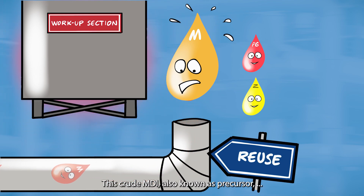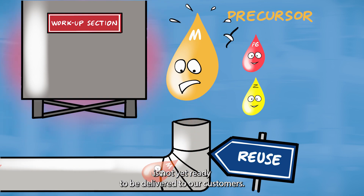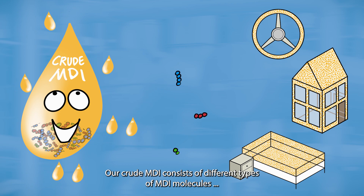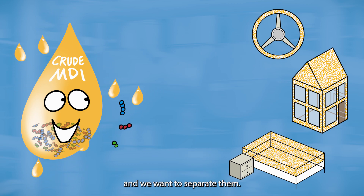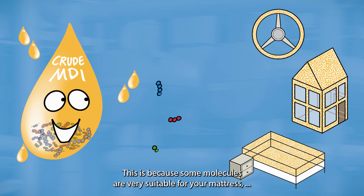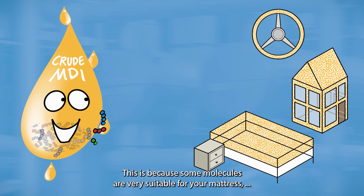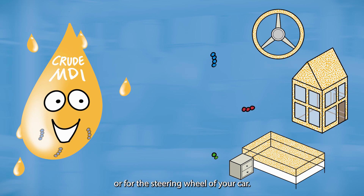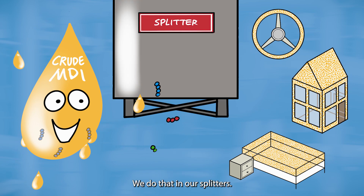This crude MDI, also known as precursor, is not yet ready to be delivered to our customers. Our crude MDI consists of different types of MDI molecules, and we want to separate them. This is because some molecules are very suitable for your mattress, but others are required for insulation material or for the steering wheel of your car. We do that in our splitters.